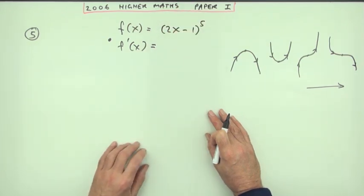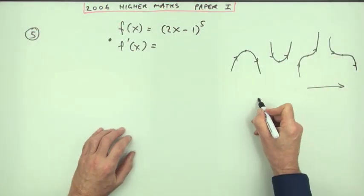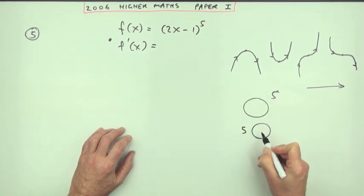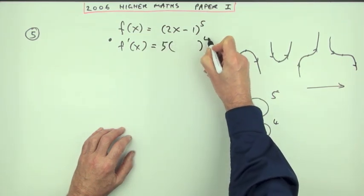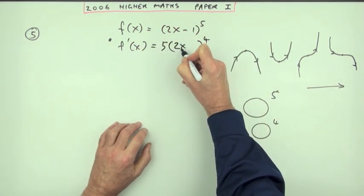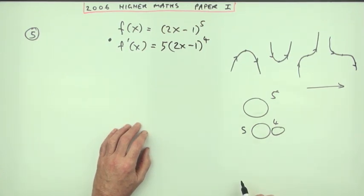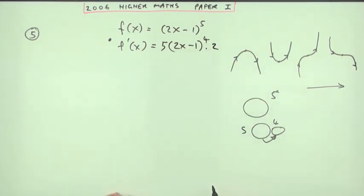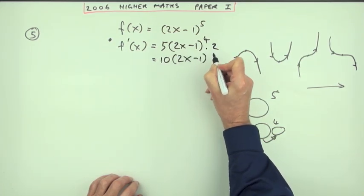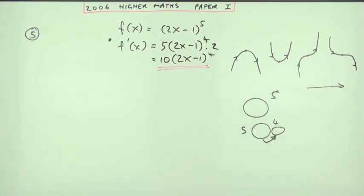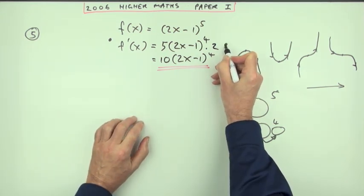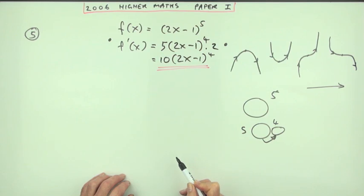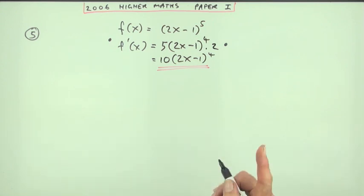Starting from the outside and working in: if you had something to the power five and differentiated, it becomes five times that thing to the power four. So it's five times (2x − 1) to the power four, then you multiply by the derivative of the inner function, which is just two. That gives 10(2x − 1)^4. The second mark comes from differentiating the outer function and multiplying by the derivative of the inner function — that's the chain rule — giving you two marks out of seven.